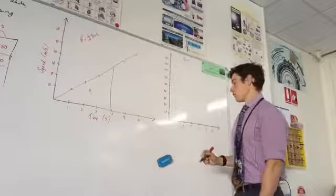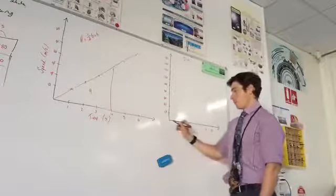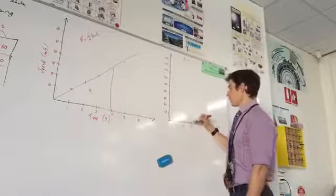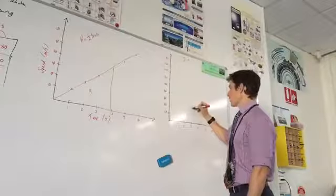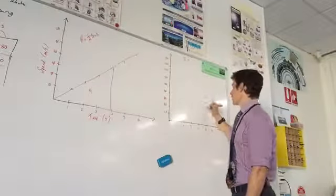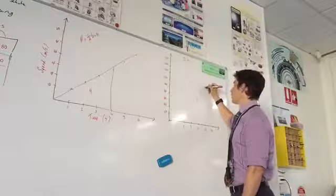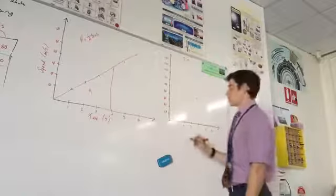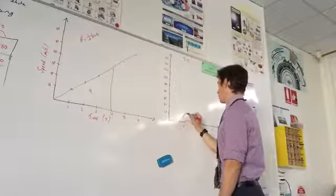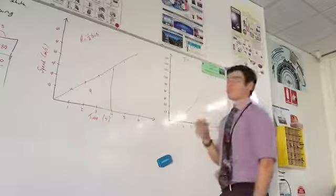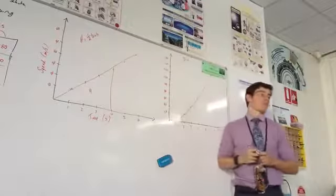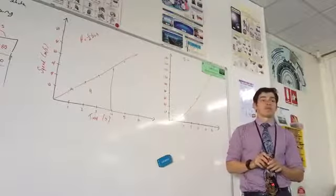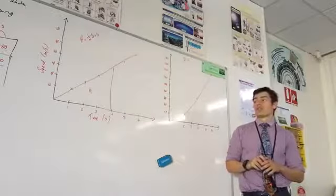Now, at one second, what was my displacement? It was five metres, sir. So, I put one about there. At two? 20 metres. At three? 45 metres, sir. About here. At four? 80 metres, sir. At five? 125 metres, sir. About there. And six? 180, sir. So, when we connect those up with a curved line. Is that what we'd expect? That's how acceleration works, sir. Okay, good.